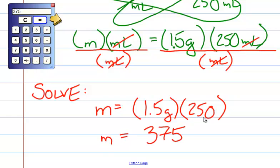So our mass is equal to 375, and the only unit that we have left is grams. So our answer is going to be grams.